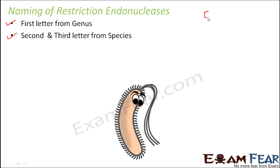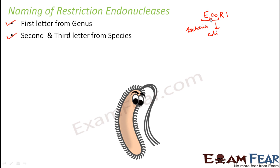Let us take the example of EcoRI. E is for the genus Escherichia, and CO is for coli. So EcoRI — E stands for Escherichia and CO stands for coli, giving us the first three letters derived from genus and species.